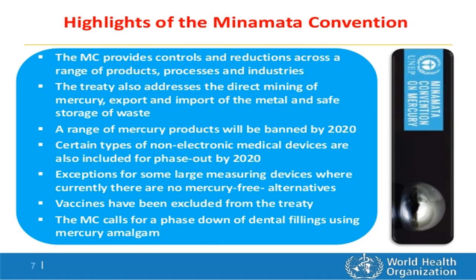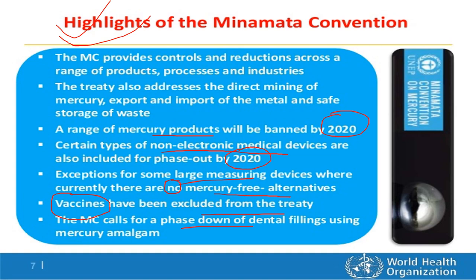The key highlights of the Minamata Convention on Mercury include: the convention aims to protect human health and environment from harmful effects of mercury by prohibiting its production and trade. A range of mercury products, including certain types of non-electronic medical devices, will be phased out by 2020, except some devices where there are currently no mercury-free alternatives. Vaccines are also excluded from the treaty, and further, the convention aims to reduce dental fillings using mercury amalgam.